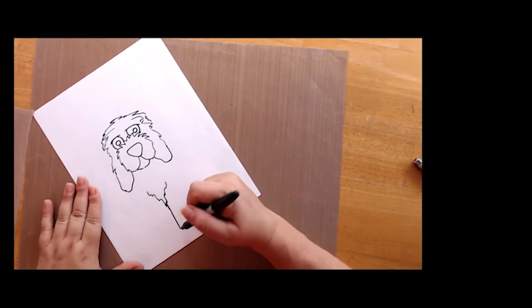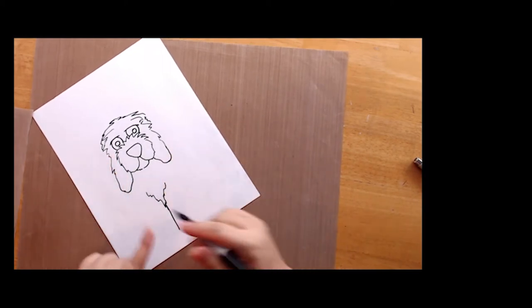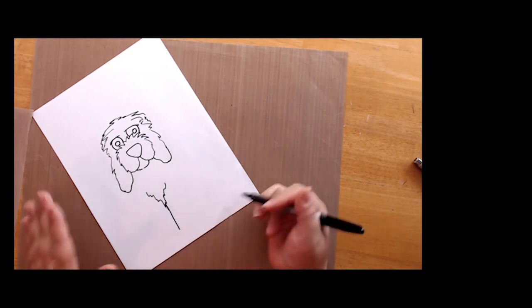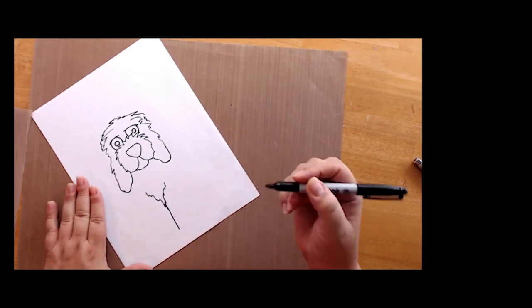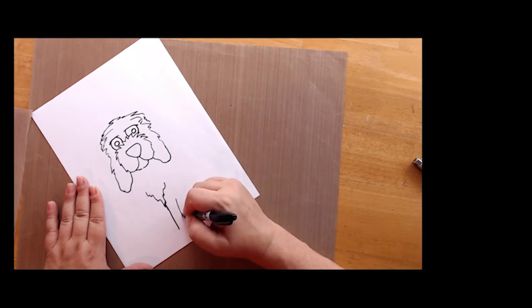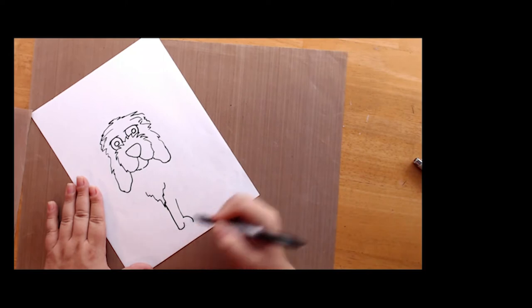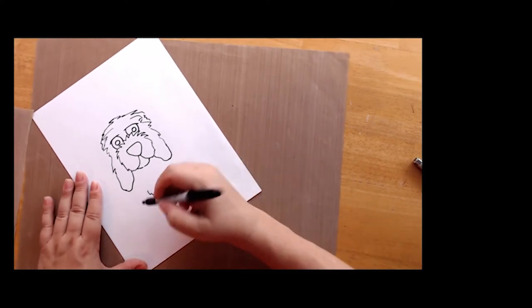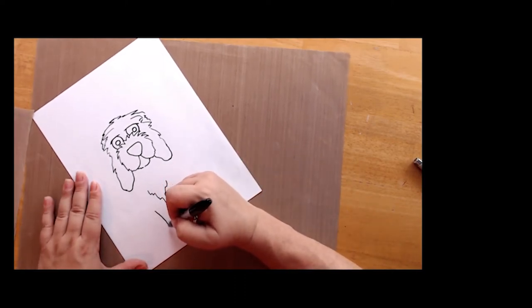And then the straight line is going to be - he's standing right in front of us, so that will be his two legs put together. Down like that, rounded paws like that. Same thing over here.